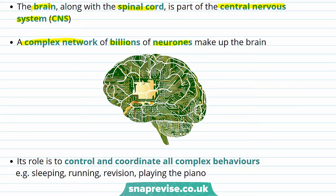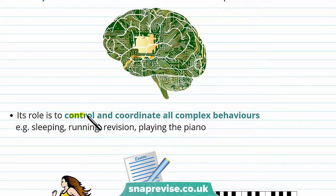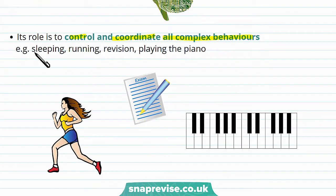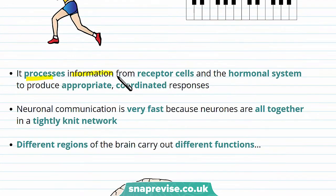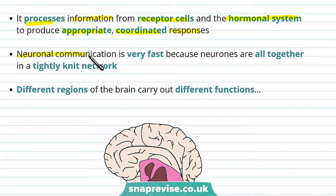Because the brain is so complicated, it's hard to tell what part of the brain controls what. The role of the brain is to control and coordinate all complex behaviors, and this includes things like sleeping, running, revision — what you're doing now — and playing the piano. What it actually does is process information from receptor cells and the hormonal system to produce an appropriate coordinated response.